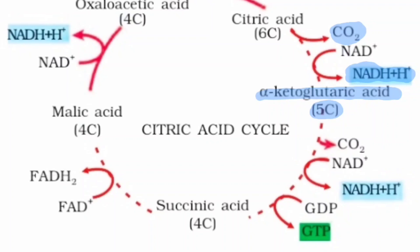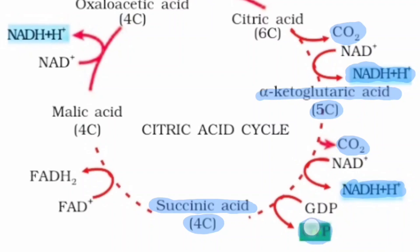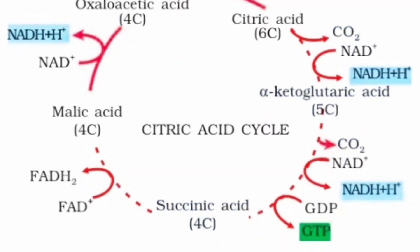Alpha-ketoglutarate is again converted into succinic acid, which has only four carbons, meaning an extra carbon dioxide has been eliminated and one more NADH + H⁺ has been formed. One more thing: an energy currency molecule other than ATP has been formed here — from the conversion of alpha-ketoglutarate to succinic acid, one GTP (guanosine triphosphate) is formed.